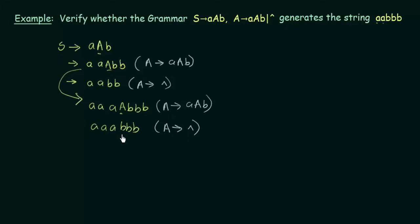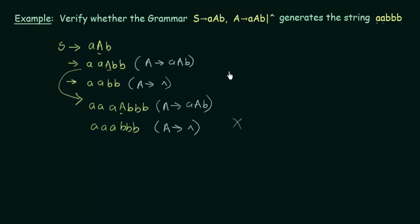Now I see that I am getting three B's as wanted, but I am also getting three a's which I don't want — I only wanted two a's. However you replace the variables using whatever productions this grammar has, you are not going to get a string of the form aABBB. So this string does not belong to this grammar — it cannot be generated using this grammar. This is how you find out whether a string belongs to a particular grammar or not. I hope that was clear. Thank you for watching and see you in the next one.